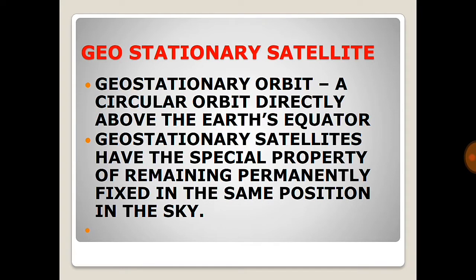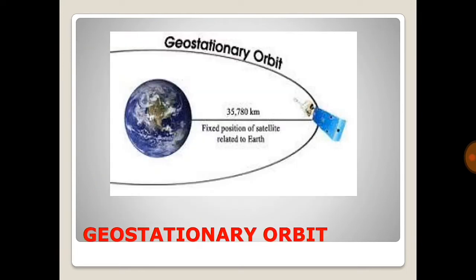A geostationary orbit is a circular orbit directly above the Earth's equator at zero degrees. Geostationary satellites have the special property of remaining permanently fixed in the same position in the sky — they are stationary, they don't move. As shown in the diagram, this orbit is fixed at a height of 35,000 to 36,000 kilometers from the Earth.